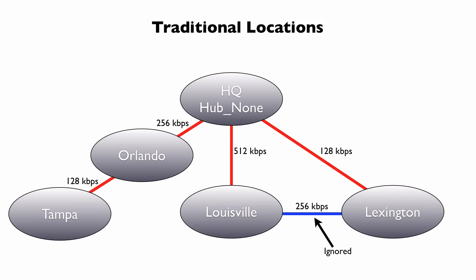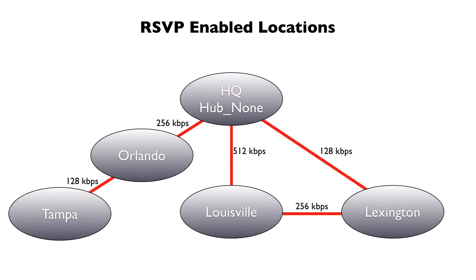Take a look at Tampa — Tampa goes through Orlando to get back to the HQ site, but HQ is assuming Tampa is just another spoke in this hub-and-spoke topology. Meaning that when a phone from Tampa places a call, Communications Manager would deduct that bandwidth amount from the Tampa link, but not from the Orlando link. The Tampa call is going through Orlando and taking bandwidth from the Orlando link, but that bandwidth would not be deducted from the Orlando link with traditional locations.